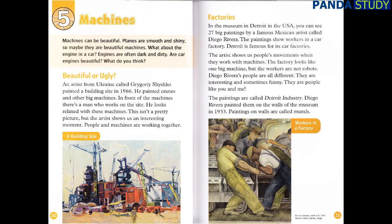Chapter 5: Machines. Machines can be beautiful. Planes are smooth and shiny, so maybe they are beautiful machines. What about the engine in a car? Engines are often dark and dirty. Are car engines beautiful? What do you think? Beautiful or ugly? An artist from Ukraine called Grigory Shysko painted a building site in 1966. He painted cranes and other big machines. In front of the machines, there's a man who works on the site. He looks relaxed with these machines.